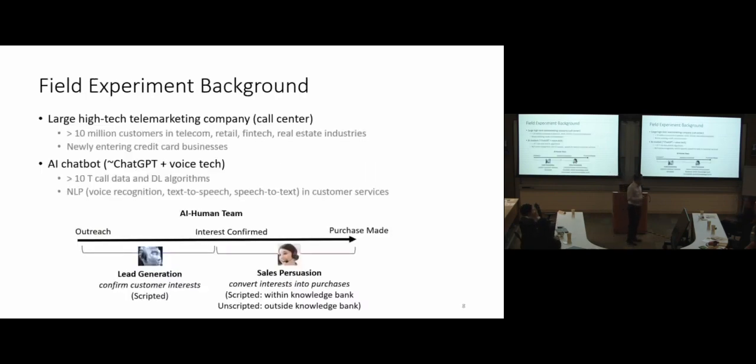The performance implication is very straightforward. Higher creativity leads to higher performance. That's good for the company as well. How can we test this with causal evidence? We run RCT. We're lucky to find a company. We run a field experiment. It's a high-tech marketing company, a call center. They have over 10 million customers. It's B2B and B2C business.